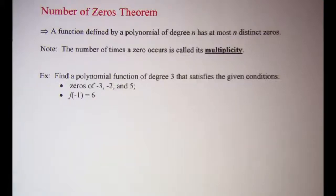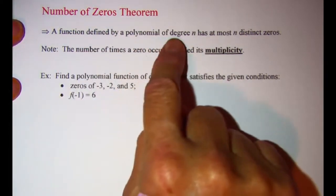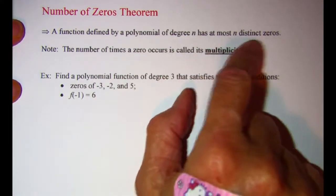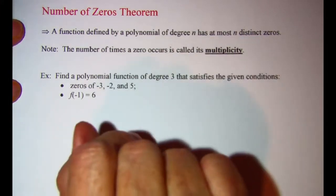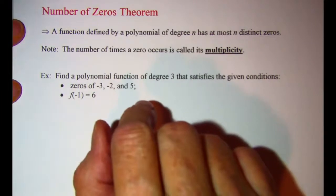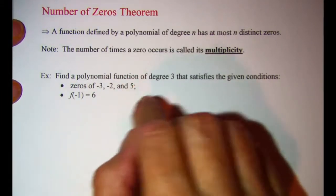In this video we will be using the number of zeros theorem to find a polynomial function. We know that a function defined by a polynomial of degree n has at most n distinct zeros. So if I have a fourth degree polynomial I'll have at most four zeros, and if I have a tenth degree polynomial I'll have at most ten zeros.